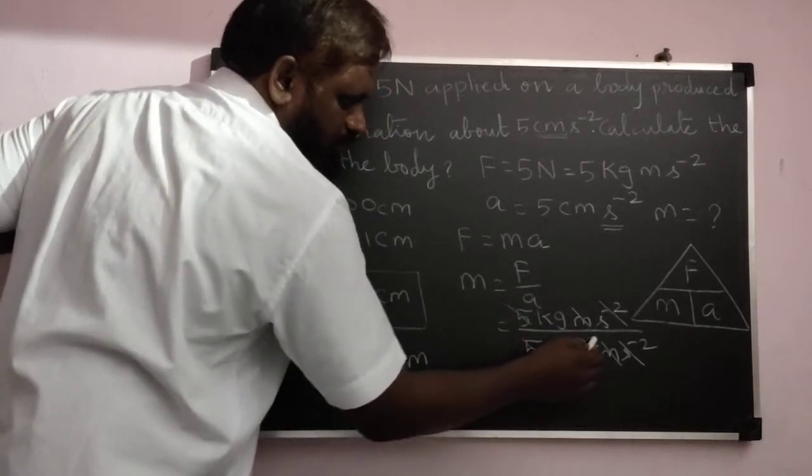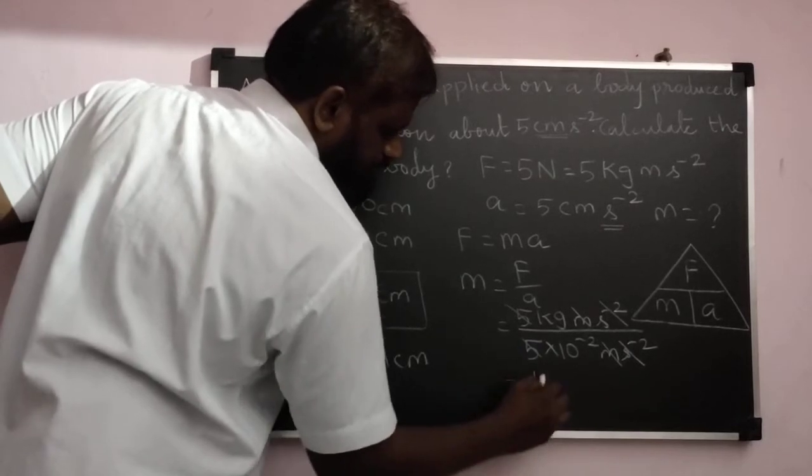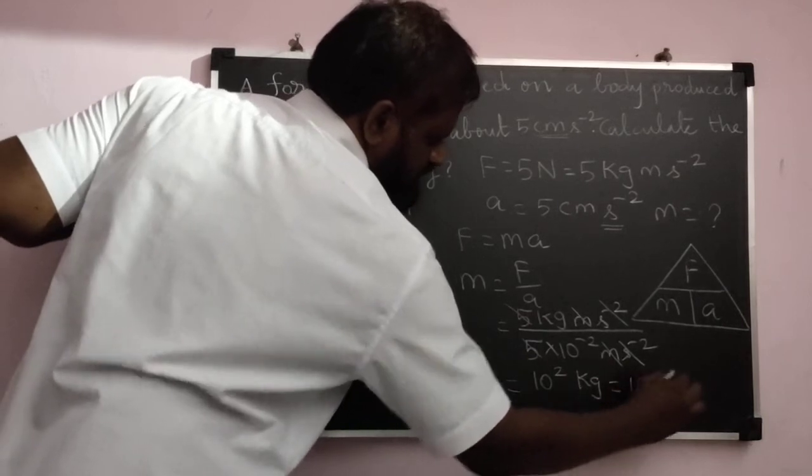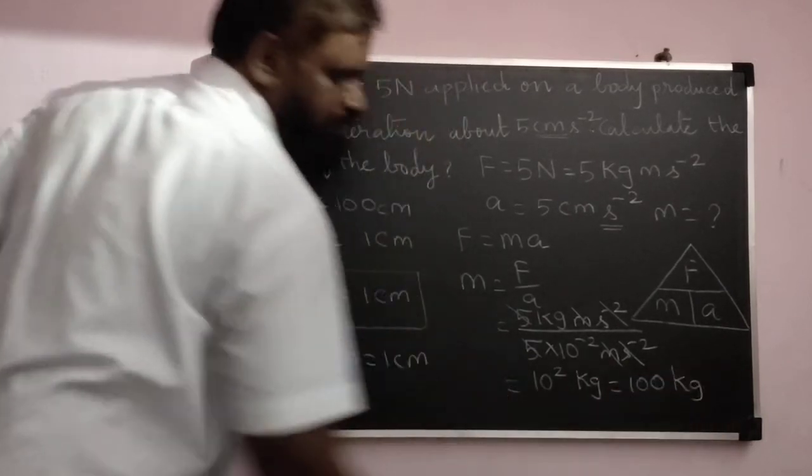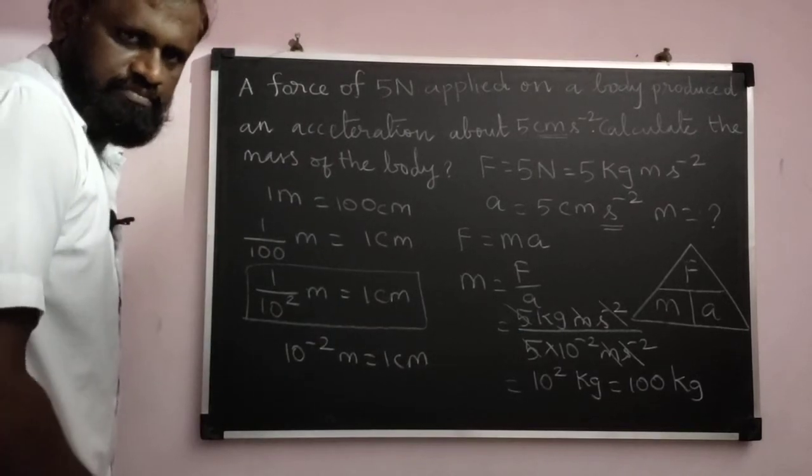Cancel this meter second power minus 2. 5 and 5 cancel. What's remaining? Kilogram in the numerator, denominator 10 power minus 2. Take the 10 power minus 2 to the numerator, it will become 10 power 2 kilogram, otherwise it is 100 kilogram. So this is the mass of the given body. Thank you all.